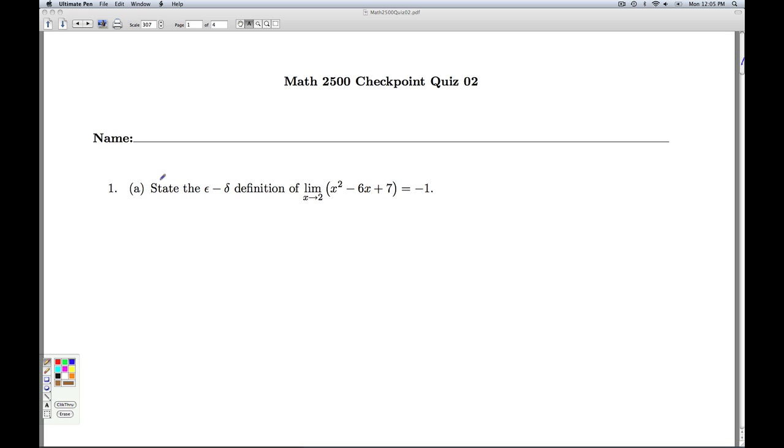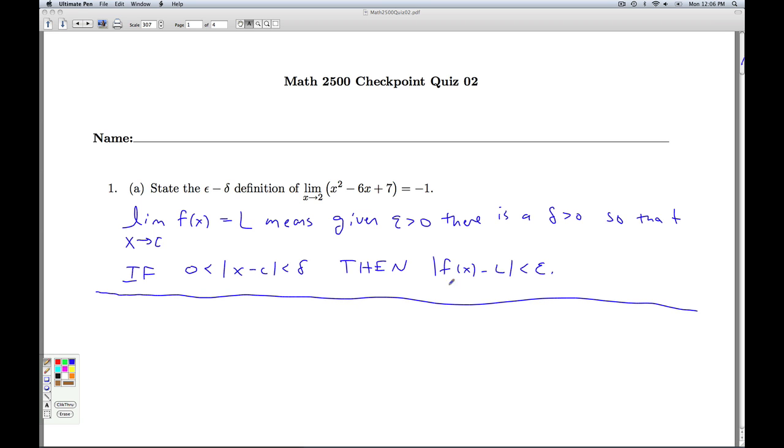Let's remember what the epsilon-delta definition of limit is. The limit as x approaches c of f(x) equals l means that given epsilon greater than 0, there is a delta greater than 0, so that if 0 is less than the absolute value of x minus c is less than delta, then the absolute value of f(x) minus l is less than epsilon. That's the definition for generic x going to c, f(x) equals l.